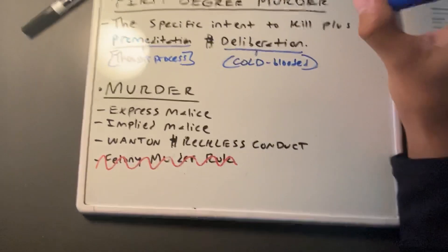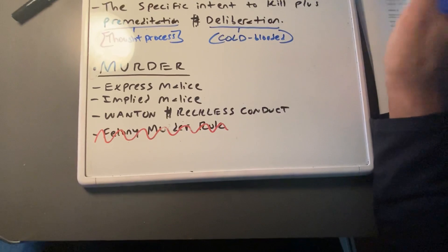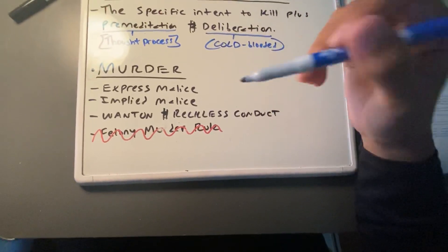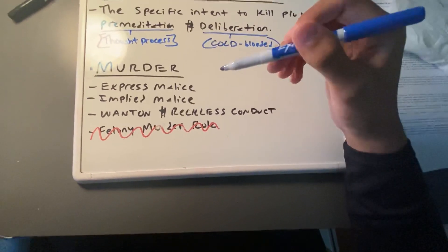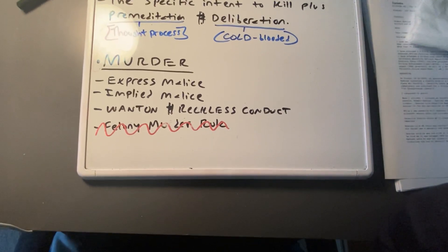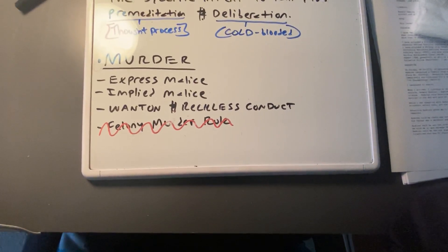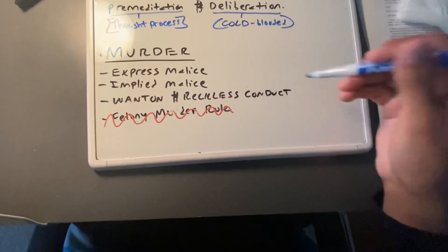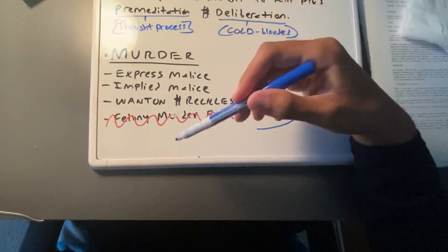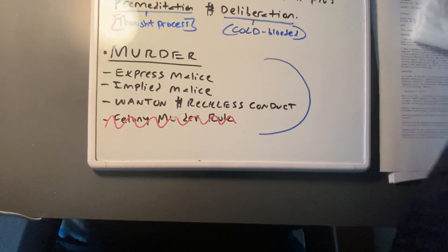So we have murder. Do not believe anyone online in terms of what their definition of murder is unless they went to law school or are a licensed attorney. Do not go on Google because they are all wrong — the law can easily be misinterpreted if you have not studied it. Murder means the unlawful killing of another with malice aforethought. Malice aforethought has four important elements, and D only needs one of the four to be liable for murder.